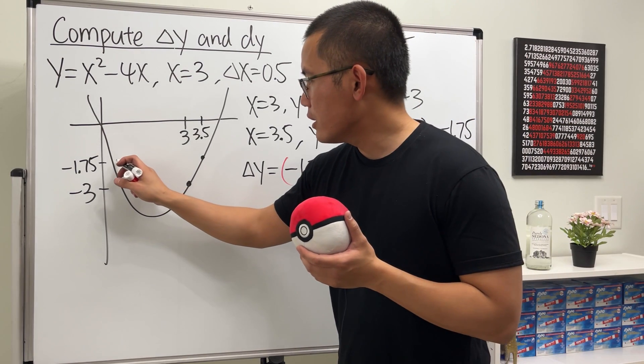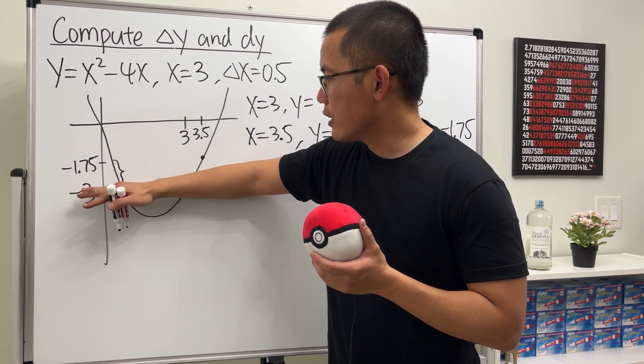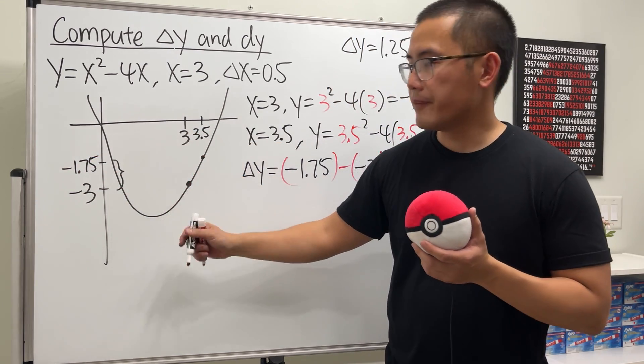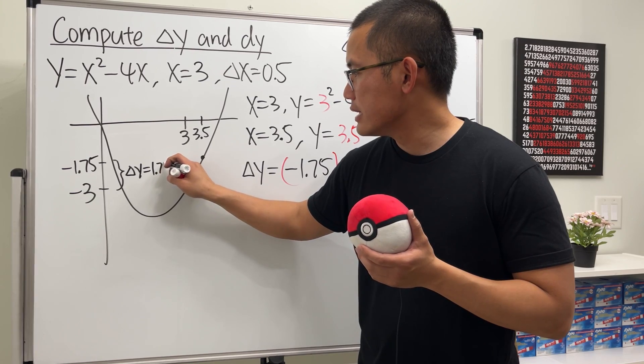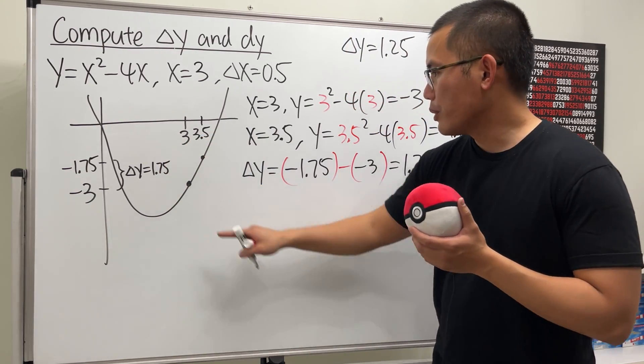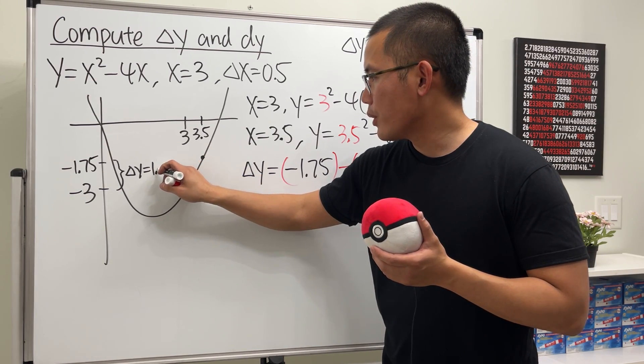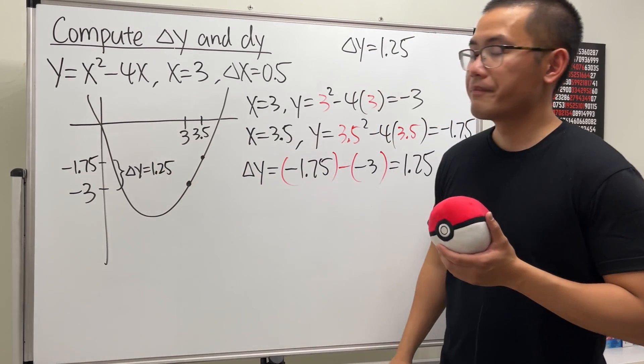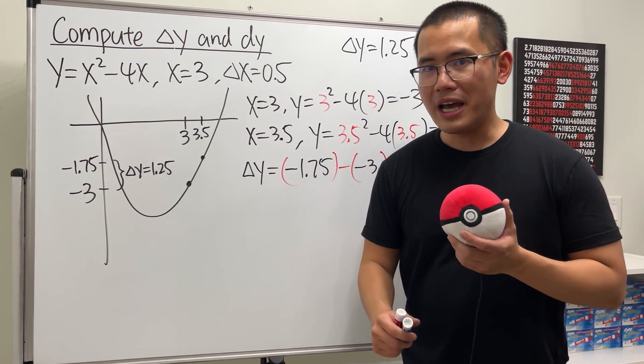Worked out, this is 3 minus that we get positive 1.25. So delta y equals 1.25. For a picture right here, it's this distance from here up here, the change in y. So that's delta y, and that's 1.25.